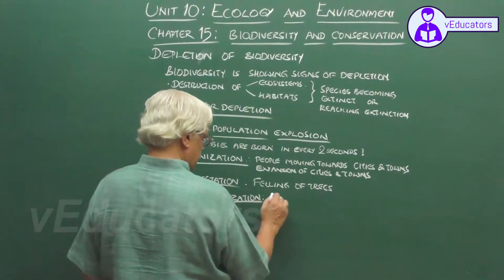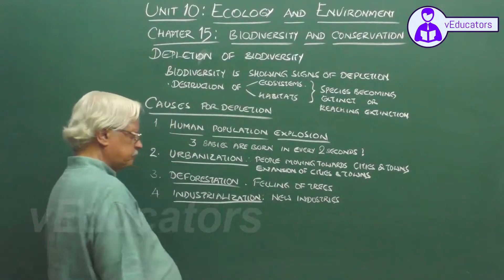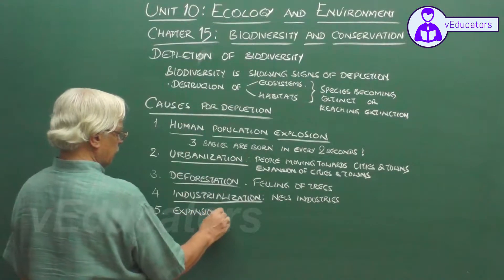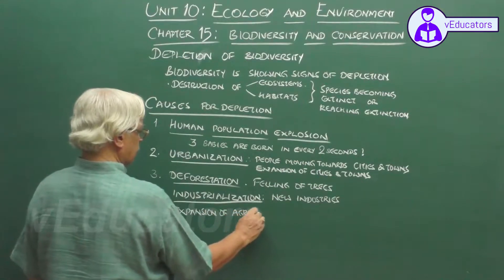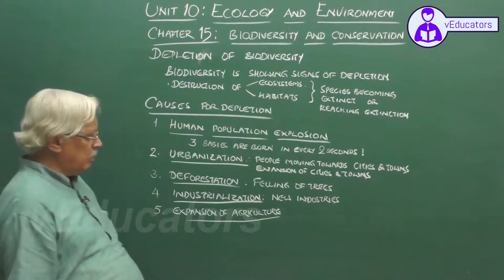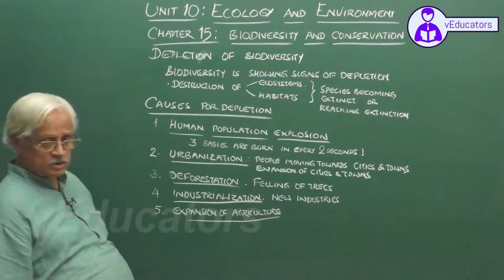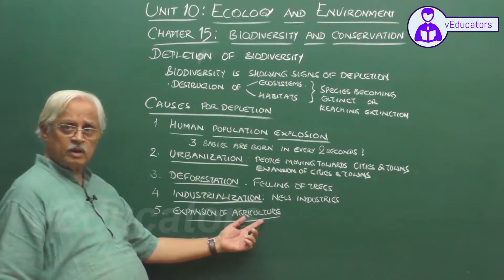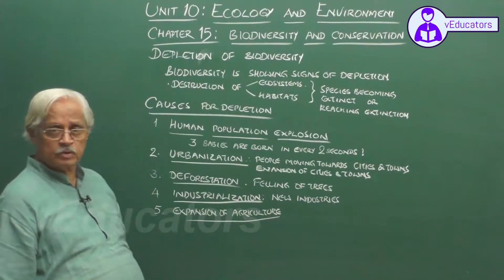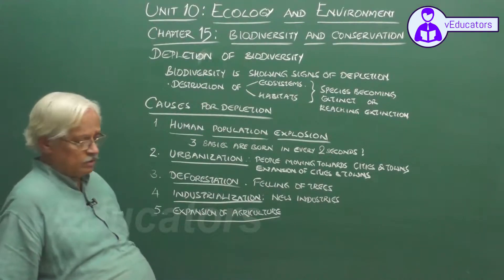Industrialization — the setting up of new industries — and the expansion of agriculture to meet the increasing demand for food caused by human population explosion also contribute to biodiversity loss. Land set aside for agriculture has to be increased to bring about greater food production, making agricultural expansion another reason for the destruction of habitats.